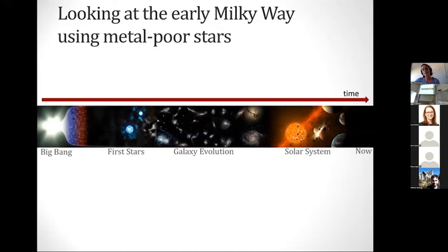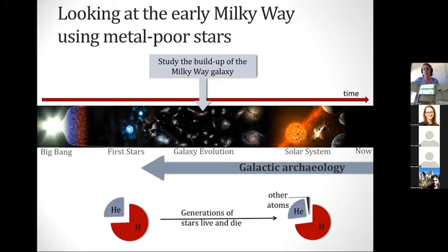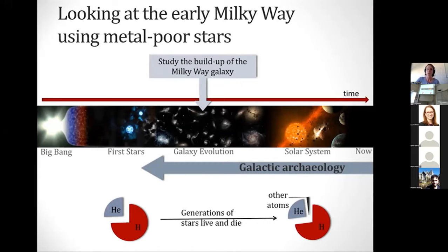One excellent way to start studying the early Milky Way is by using metal-poor stars. As we all know, the universe started out made of just hydrogen, helium, and a little bit of lithium. Over the generations of stars that were created, this metal content has been building up. So if we want to look back in time, one way to do that is to look at long-lived stars that have very little of these heavy elements in their atmospheres. We can use these stars to study the build-up of the Milky Way galaxy.